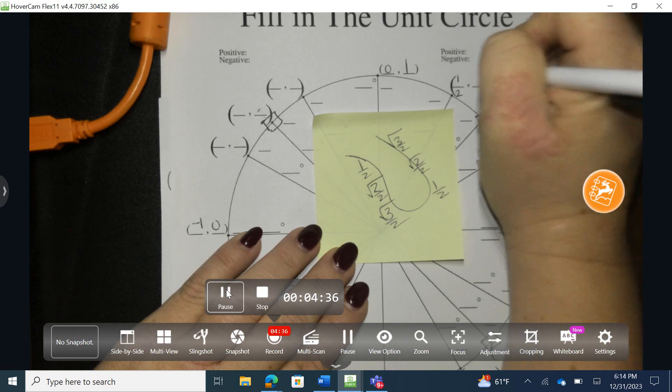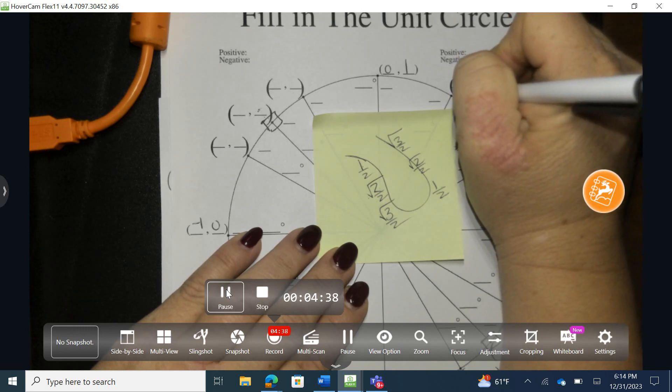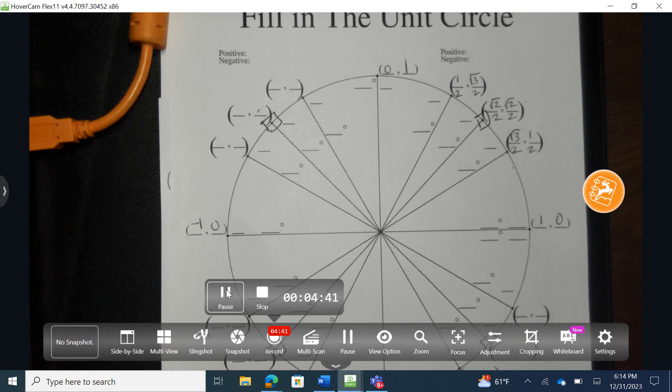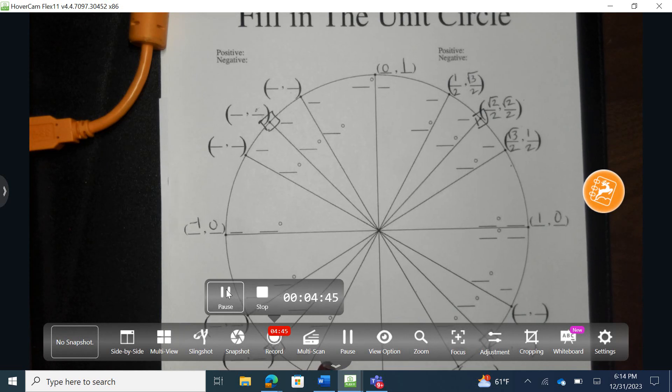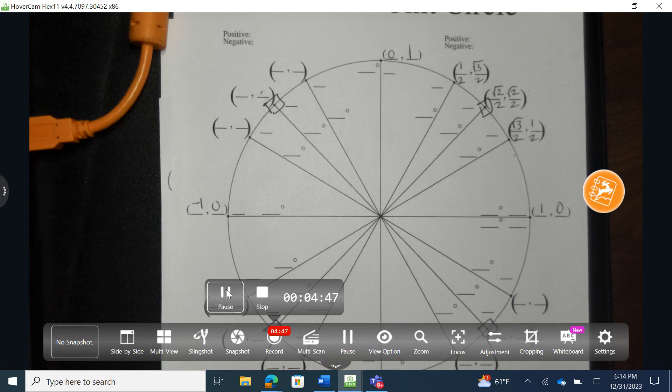I do think it's absolutely critical that you understand how these were composed using the 30-60-90 triangles and the 45-45-90 that was shown in the video provided to you by Mr. McFarlane.